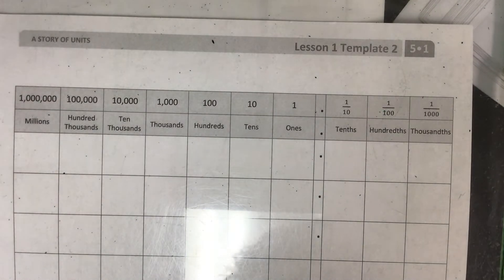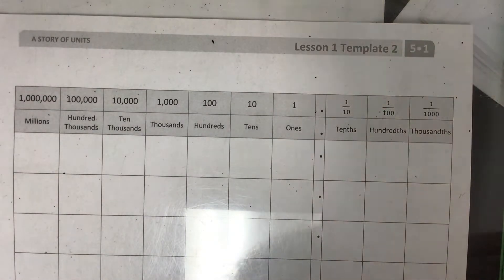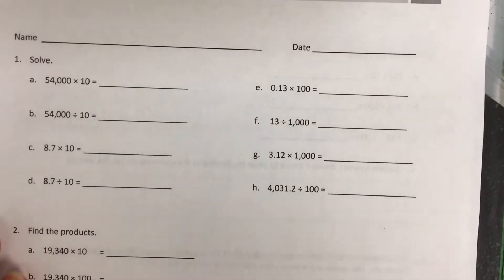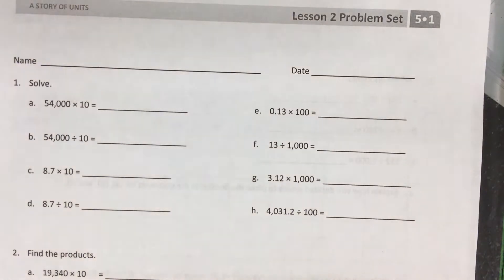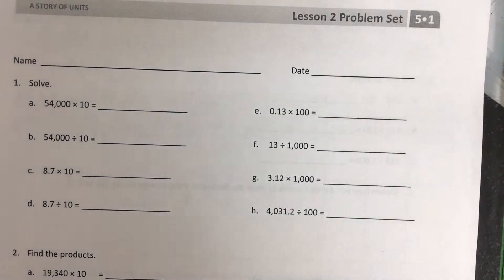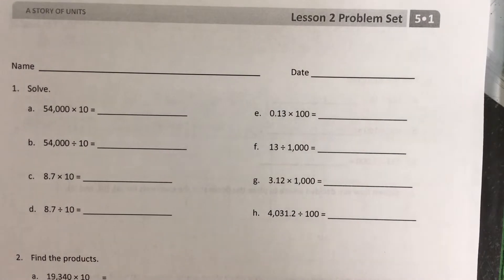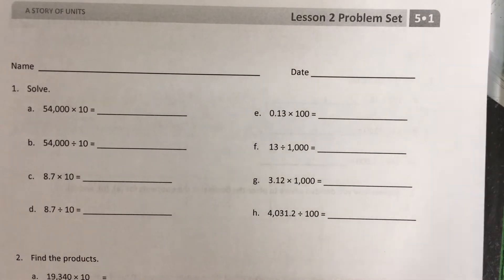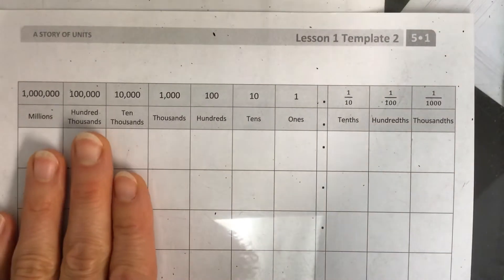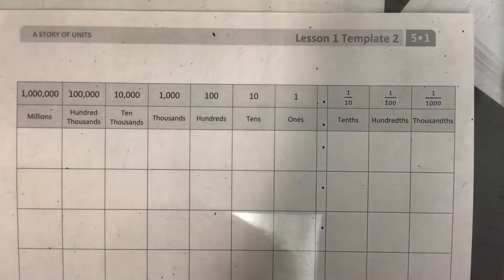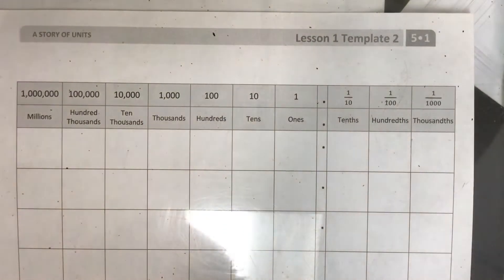You can find Lesson 2 in your workbook and follow along. In this lesson, you're supposed to concentrate on doing it mentally — they don't draw the place value charts for you. But if you need to use it, that is okay. Use this template as much as you want; we're going to use it a lot in fifth grade.